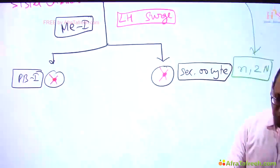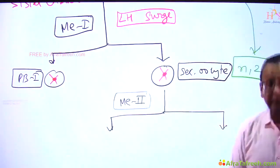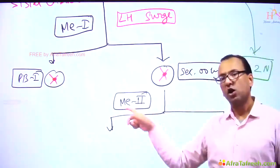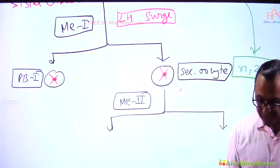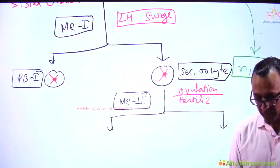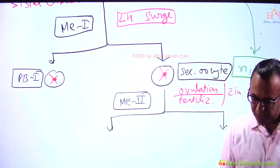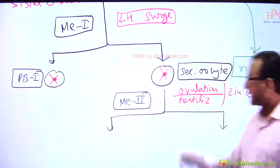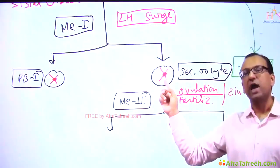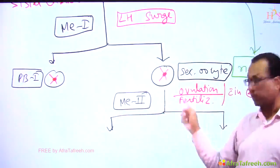As the secondary oocyte is entering meiosis II, you will find that it undergoes ovulation. So the secondary oocyte enters meiosis II and undergoes ovulation. As it is now waiting for the sperm, the sperm must fertilize the secondary oocyte within 24 hours. If it does not fertilize the secondary oocyte within 24 hours, the secondary oocyte is degenerated and menstruated by the end of the cycle.